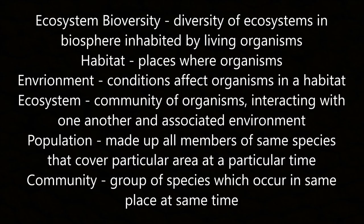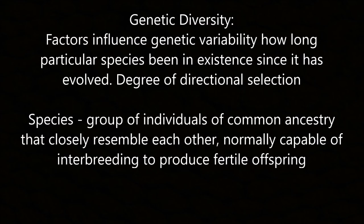Ecosystem biodiversity is the diversity of ecosystems in the biosphere inhabited by living organisms. A habitat is a place where organisms live. The environment describes conditions affecting organisms in a habitat. An ecosystem is a community of organisms interacting with one another and their associated environment. A population is all members of the same species in a particular area at a particular time. A community is a group of species occurring in the same place at the same time.